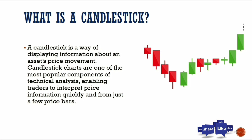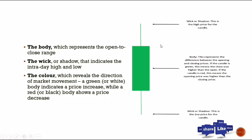What you see here are candlesticks. Let's break down each one. If you look at a single candlestick, you can see there are some important parts you have to know: one of them is the body, another is the wick, and we also have the color. The body represents the open-to-close range.